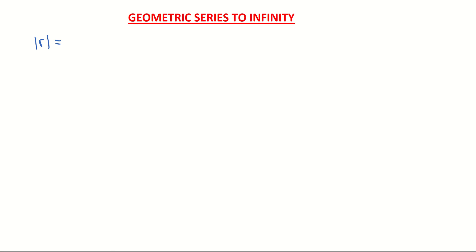The true value — the positive value — of the common ratio must be less than one. Take for example the series 1 + 1/2 + 1/4 + 1/8 + 1/16 and so on to infinity. I'm adding this sequence together to create a series, and each of my values is getting smaller and smaller.